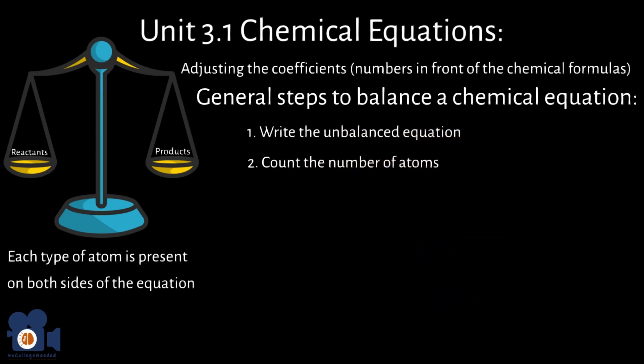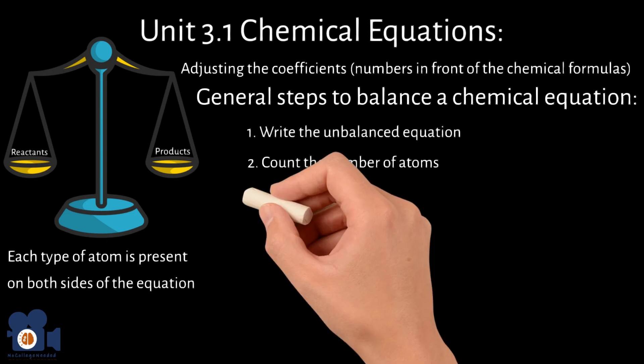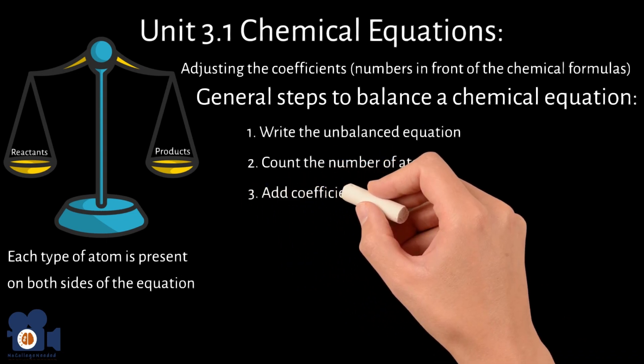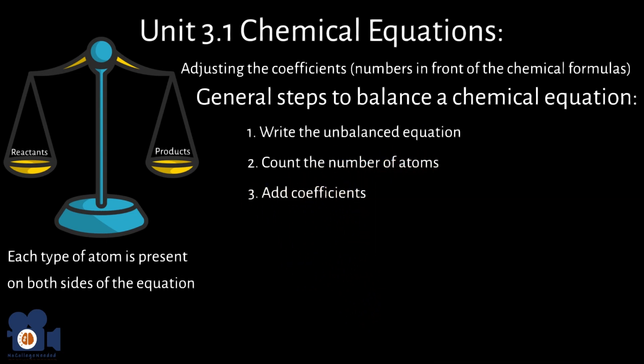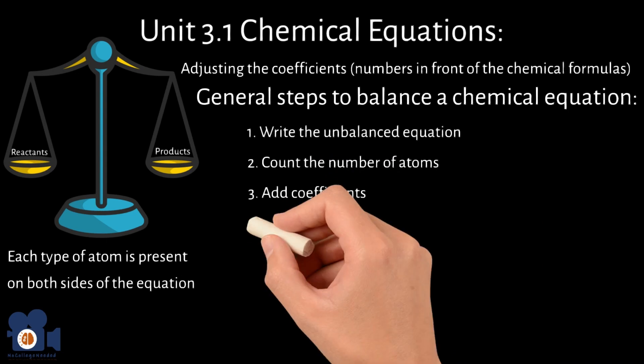Count the number of atoms of each element on both sides of the equation. Step 3: Add the coefficients. Place coefficients in front of the chemical formulas to balance the number of atoms of each element on both sides of the equation. Step 4: Check the balance.